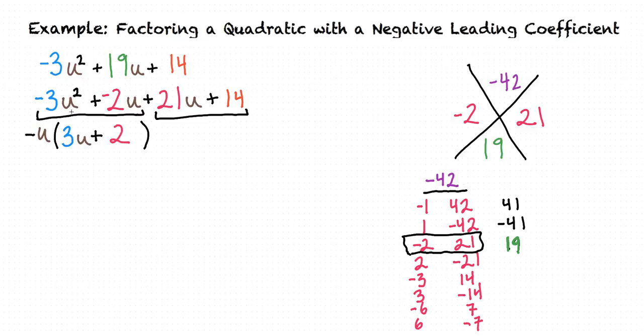Now that we've factored our first pair of terms, let's do the same to our second pair of terms. The greatest common factor of 21u and 14 is 7, positive 7. So we're going to factor out positive 7 from both of those terms. In our first term here, 21u divided by 7 is 3u, and the second term, 14 divided by 7, is 2.